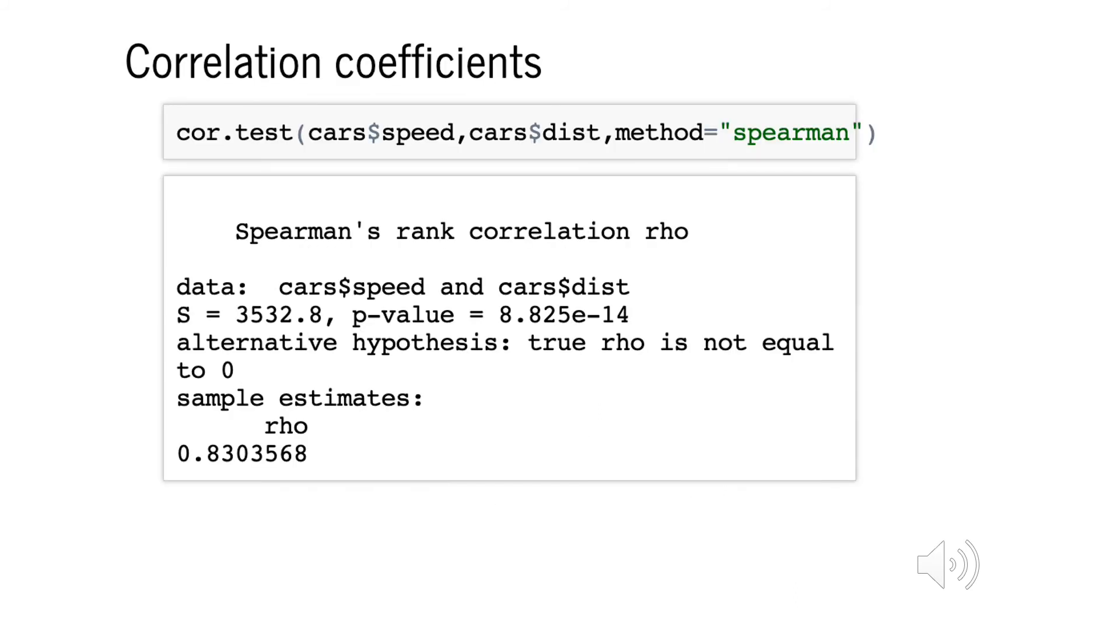Additionally, we can perform a Spearman correlation test between speed and distance. In this case, we see again the p-value is very small, and the correlation coefficient is approximately 0.83.